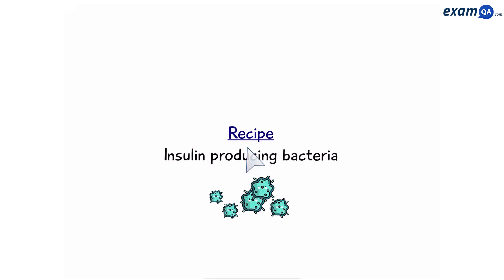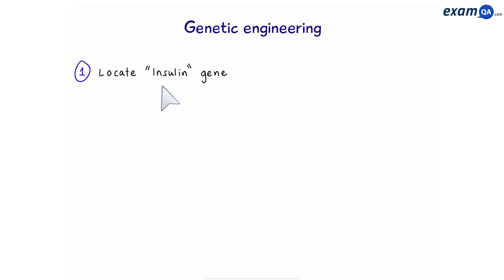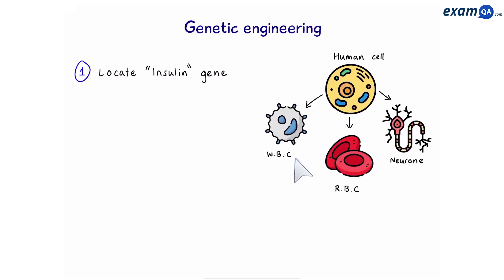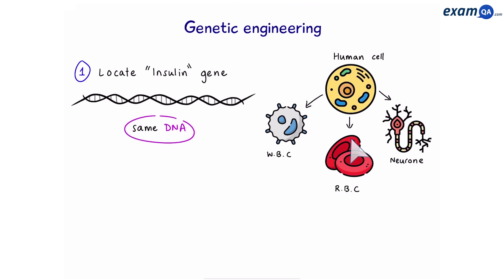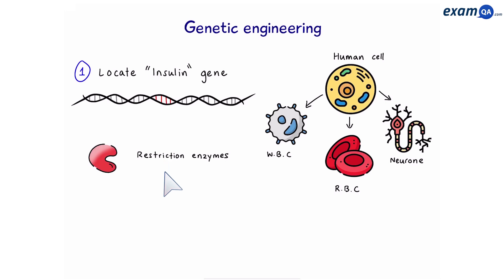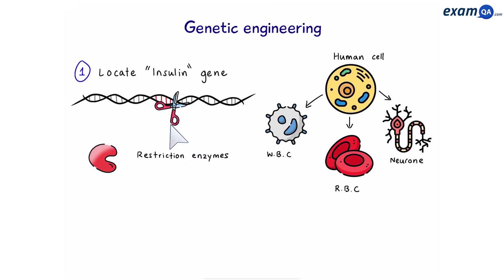Here's our recipe for producing insulin-producing bacteria using genetic engineering. Step one is to locate the insulin gene. We're going to get a human cell — you could use any type of human cell because they all have the exact same DNA — and locate the insulin gene within the whole DNA. Once we've found it, we're going to use restriction enzymes, which you can think of as biological scissors, and we're going to snip on both sides of the gene to remove it.